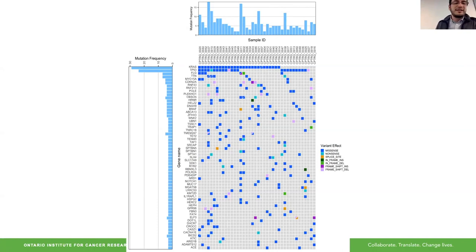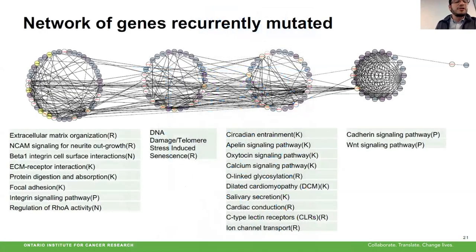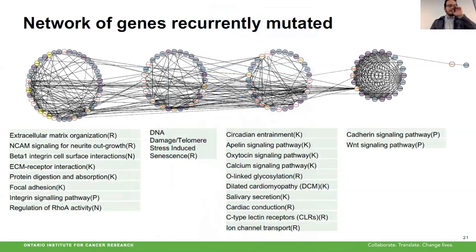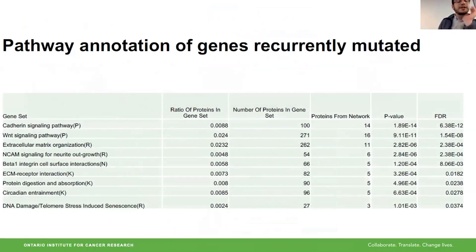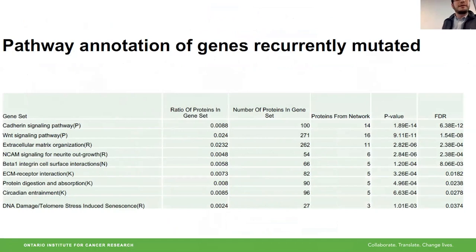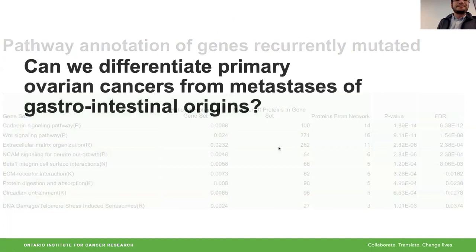Concordant with limited prior literature from targeted panels, we confirmed that the most significant alterations from an SNP point of view are K-RAS and TP53 mutations. Beyond that, this is a very heterogeneous disease, which also translates to the network and pathway analysis we attempted. The pathways most frequently altered in ovarian mucinous carcinomas are listed, and there is really no prior work on pathway analysis in these tumors to compare against.